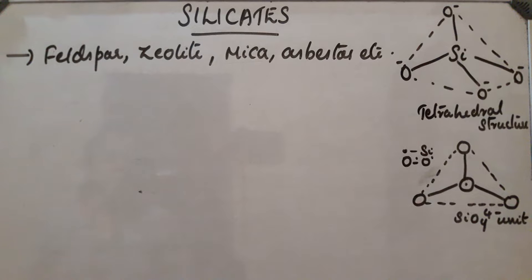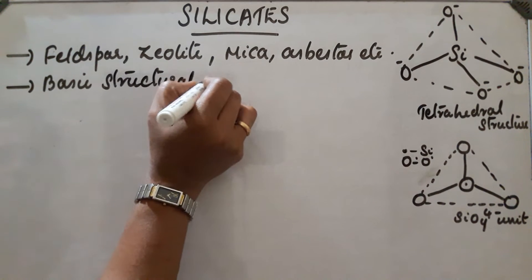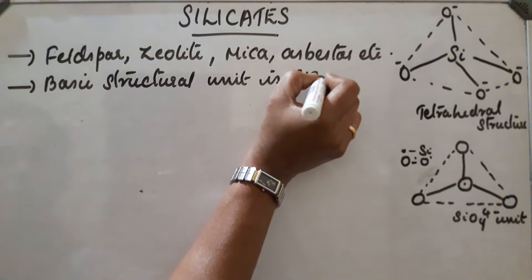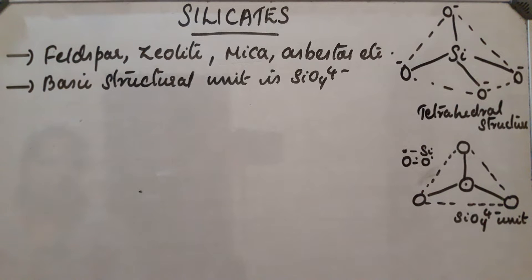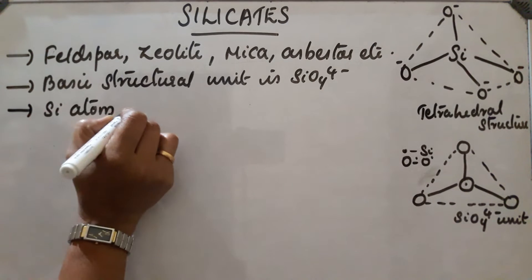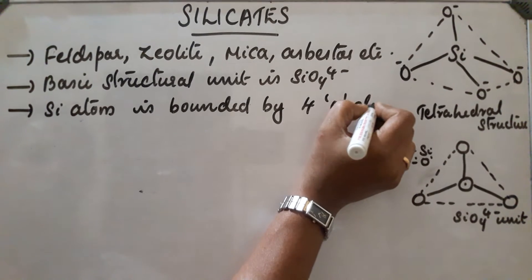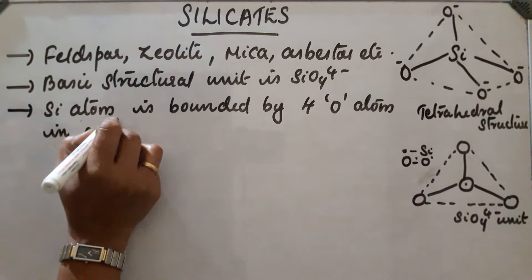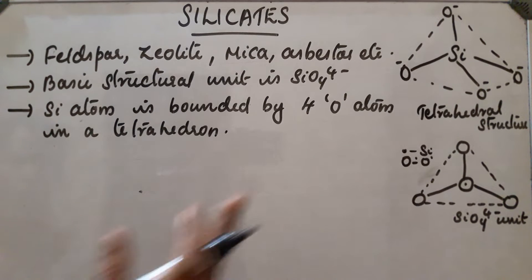The basic structural unit of silicate is SiO4 4-. This will be the structure of SiO4 4- in which Si atom is bounded by 4 oxygen atoms in a tetrahedral structure. So the structure of SiO4 4- is tetrahedral.